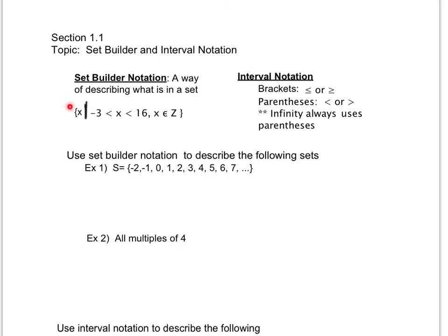Remember, it's the description of the variable you're using, so I'm using the variable x. This means such that all my x's are in between negative 3 and 16. Remember, Z means integers, so all my x's are from the integer set, so no fractions, no decimals, just positive and negative whole numbers between negative 3 and 16. I'm going to come back to interval notation. First, I want to look at a couple examples with set builder notation.